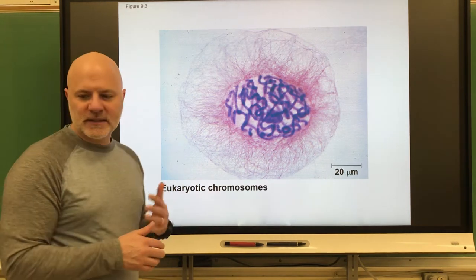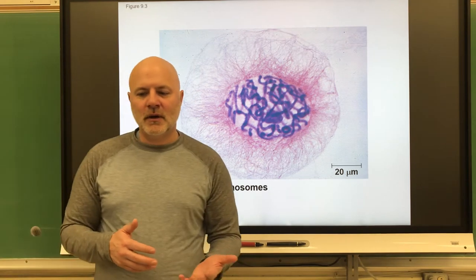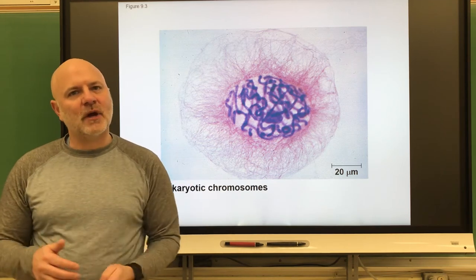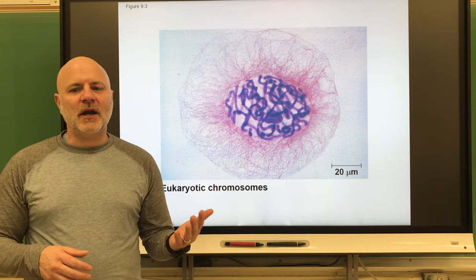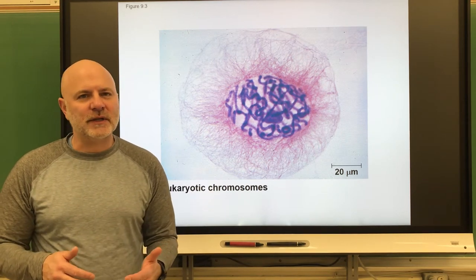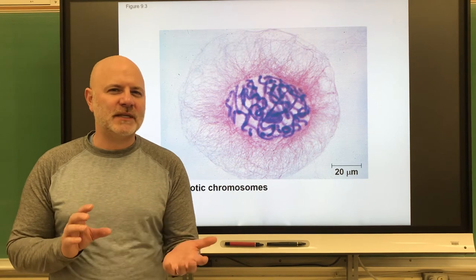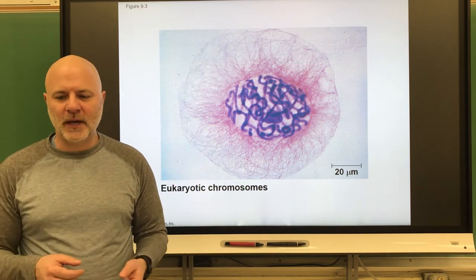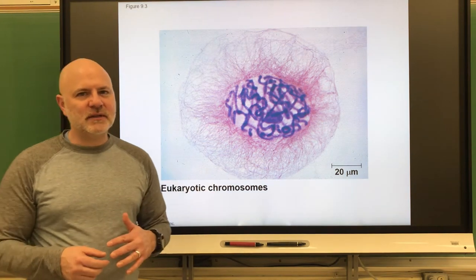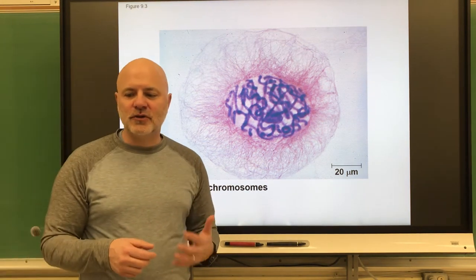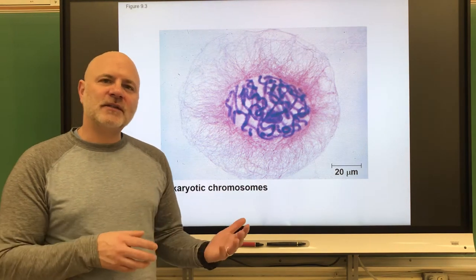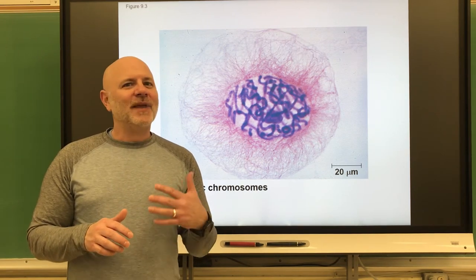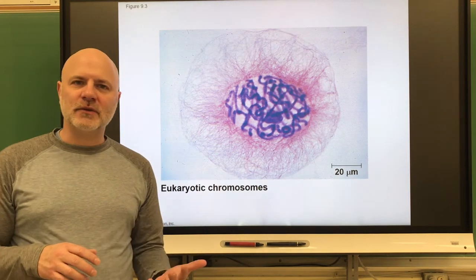Cell division is essentially two processes. One is cytokinesis, which is the division of the cytoplasm. The other is karyokinesis, which means division of the nucleus. Breaking these words down: cyto means cell, karyo refers to nucleus, and kinesis means movement. There are two types of karyokinesis. One is mitosis — the division of a nucleus into two genetically identical daughter nuclei. We start with one diploid nucleus and end with two diploid nuclei. That is how we make somatic cells.